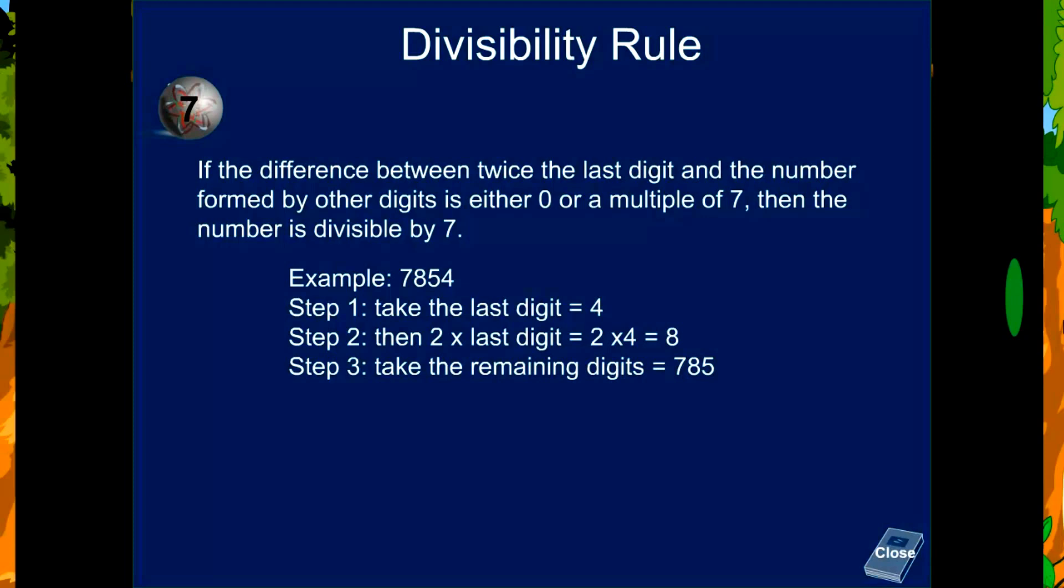Step 3: Take the remaining digits, 785. Then find the difference: 785 minus 8 equals 777.